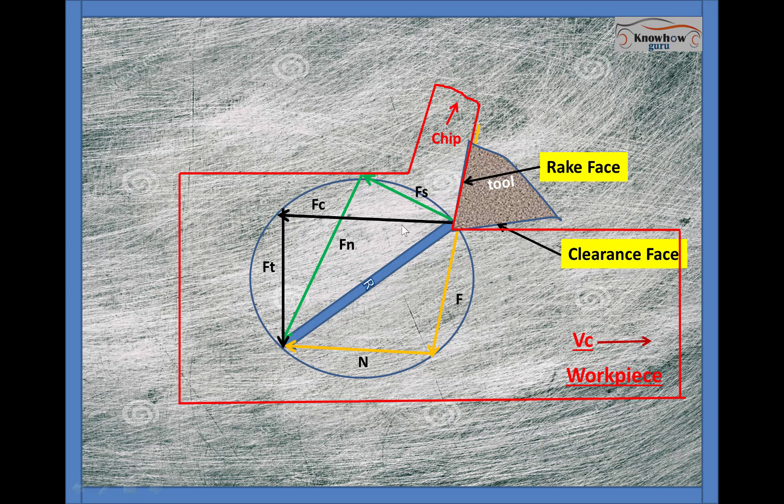Now we'll go to calculating the angles. This is the rake face on which the chip is flowing. We know the rake face angle - mostly in the ORS system we denote it as alpha, or in the ASA system it's denoted as lambda.